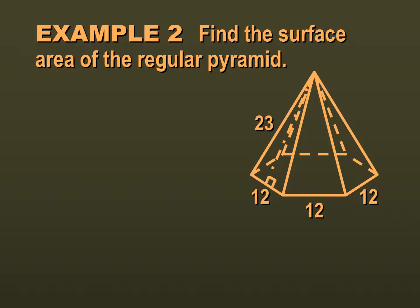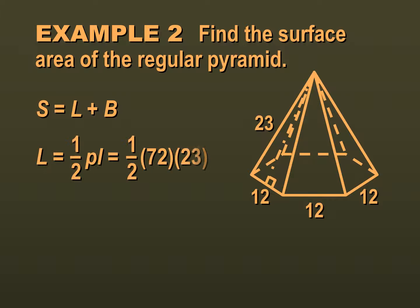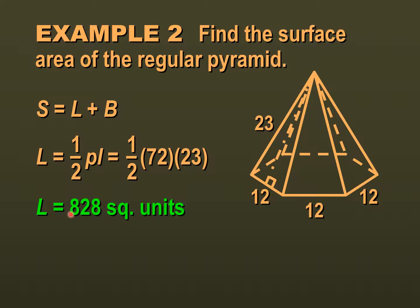Let's find the surface area of this pyramid. We'll start with our lateral surface area, which is one half our perimeter times our slant height. We have a hexagon where each side is 12, so the perimeter is 12 times 6, which is 72. Our slant height is 23 — notice the slant height goes along the pyramid, versus regular height which just goes straight up and down. So our lateral surface area is one half of 72 times 23, which gives us 828.